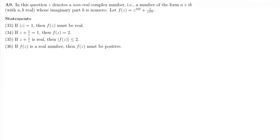In question a9, we are given a non-real complex number of the form a + ib where b ≠ 0, and f(z) = z^222 + 1/z^222.